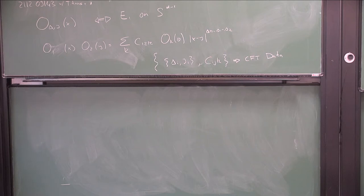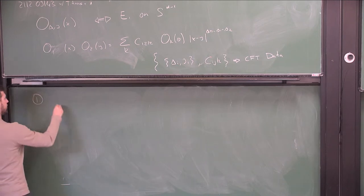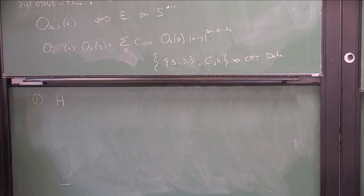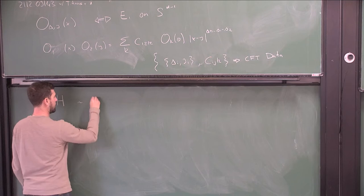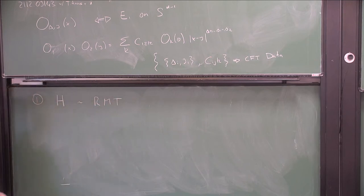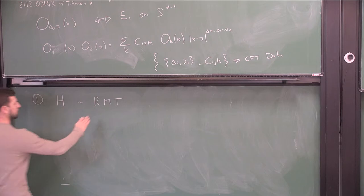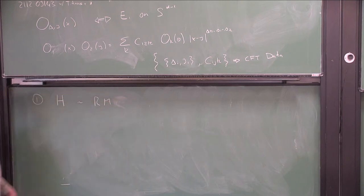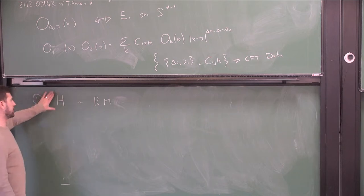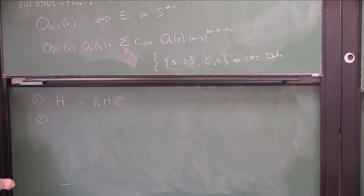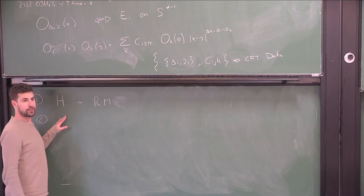Let me just remind you of some things about quantum chaos that were already discussed in this workshop. Property one is about the spectrum of the theory: the Hamiltonian of a chaotic system is well approximated, at least in the right regime, by a random matrix. That's one thing we'd like to ask. A second property that maybe we discussed a bit less is about properties of operator matrix elements.